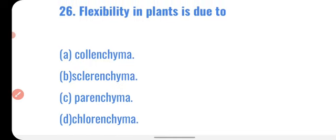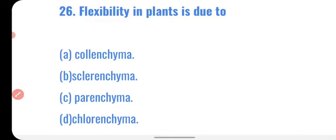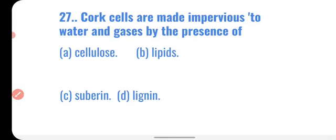Question twenty-six: flexibility in plants is due to — the tissue known as colenchyma provides flexibility to plants due to the irregular thickness in its cell wall. So the correct option is colenchyma.